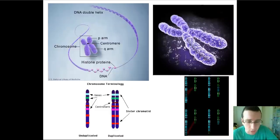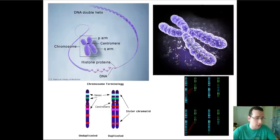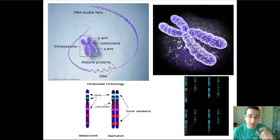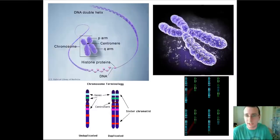The basic shape of a chromosome includes the centromere, which is the point that connects two identical copies called sister chromatids. You also have a short and a longer arm, which are called the P and Q arm respectively — P for petite arm.